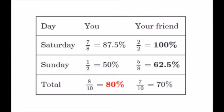Now look at this example. You and your friend attempted a quiz for two consecutive days. On Saturday, you solved seven out of eight problems, but your friend solved two out of two. You had solved more problems, but your friend pointed out that he was more accurate because he got 100% marks and you got 87.5% marks.